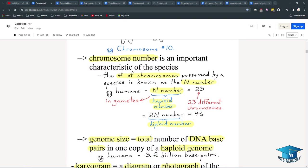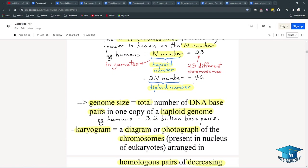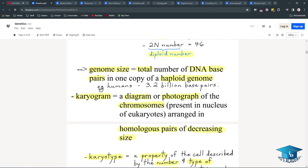The chromosome number is an important characteristic of the species. So our N number is 23, meaning this is how many we have in our haploid cells. And our 2N number is 46, how many chromosomes we have in our diploid cells. Genome size is the total number of DNA base pairs in one copy of a haploid genome. So for us, it's around 3.2, 3.3 billion base pairs.